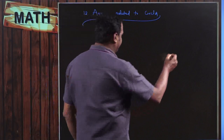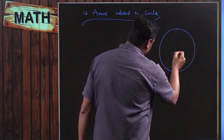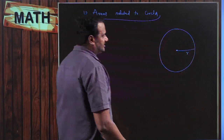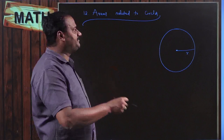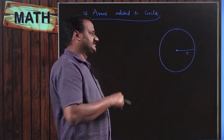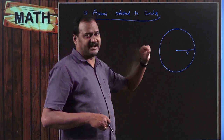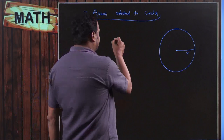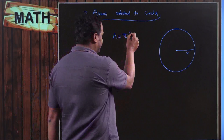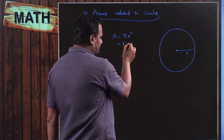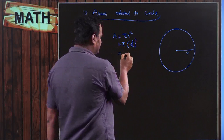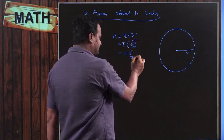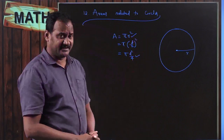If I draw a circle, this is the center of the circle and this is the radius. The center of the circle joined to any point on the circumference gives the radius. We know that the area of the circle is equal to πr² or π × d²/4.